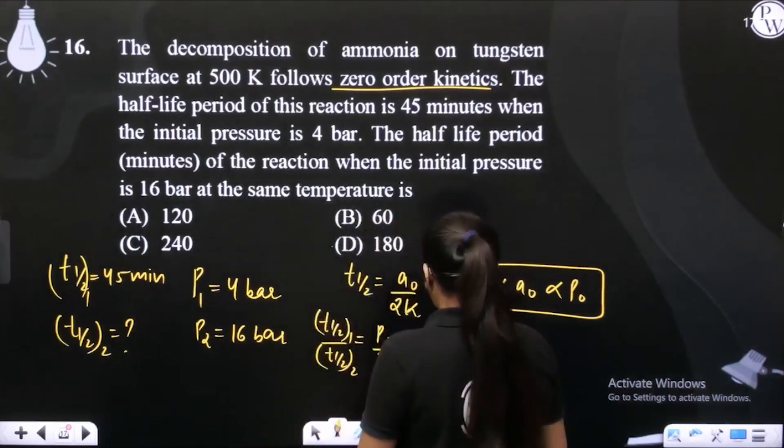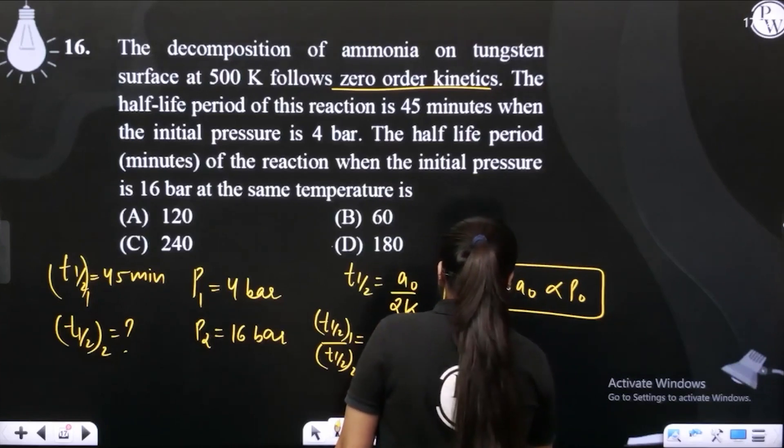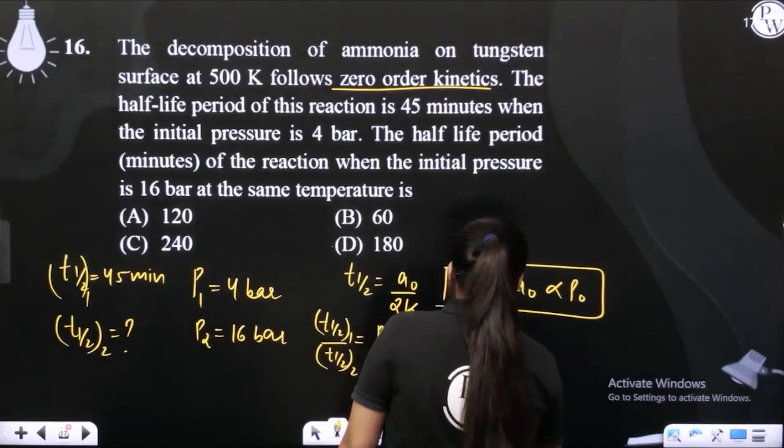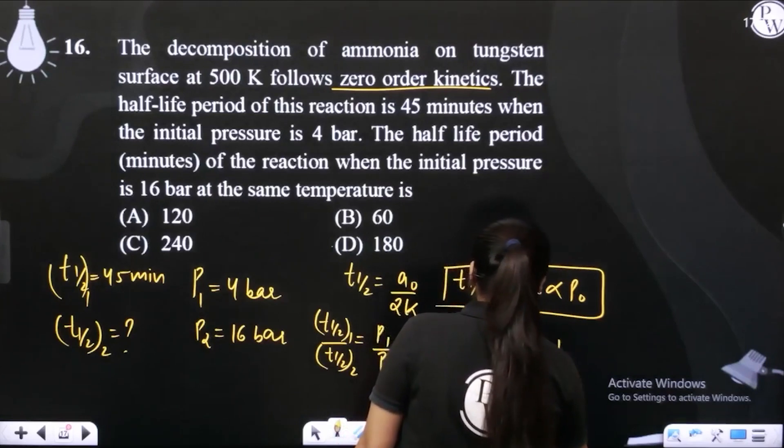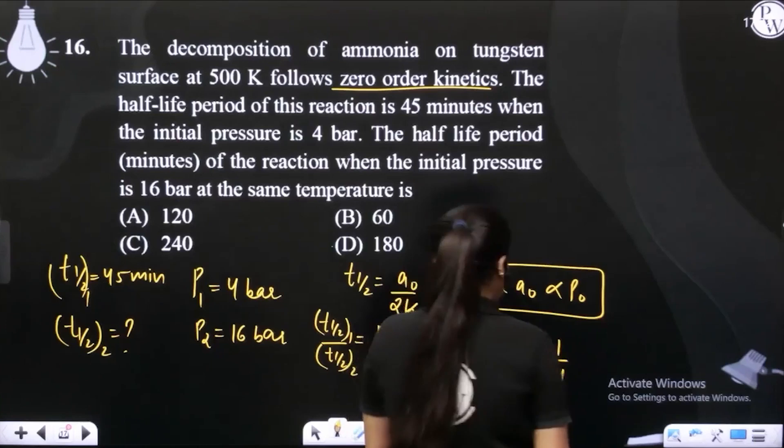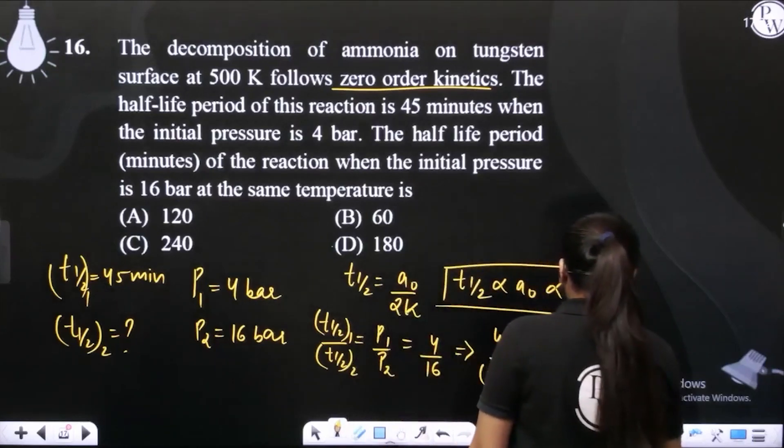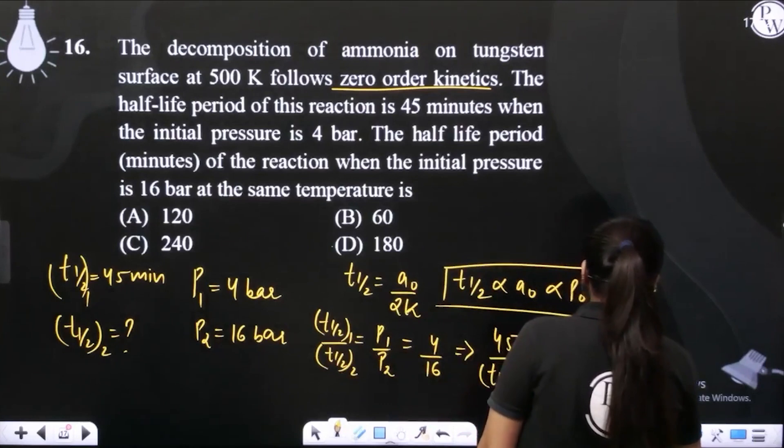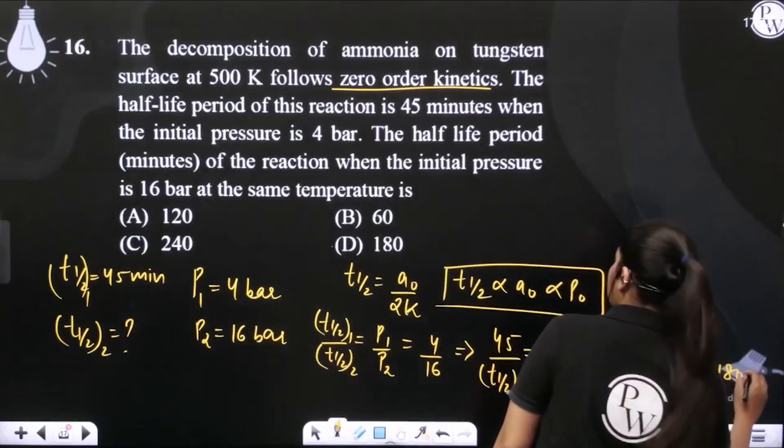Half-life initially de rakhi hai 45 minutes. So 45 upon t half is equals to 1 upon 4. So yahan se humari half-life kitni aagayi? Jab pressure 16 bar hai, to half-life kitni ho jayegi? 45 into 4 which is equals to 180.